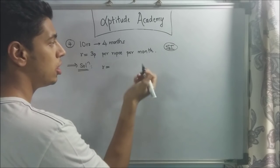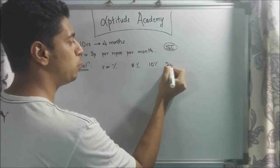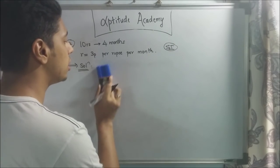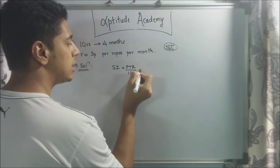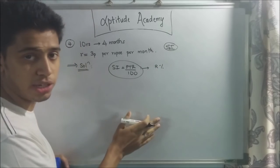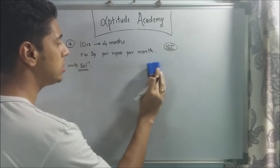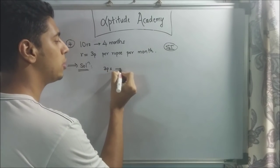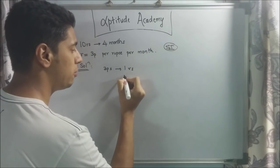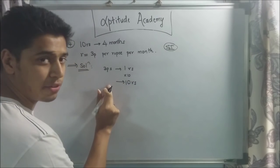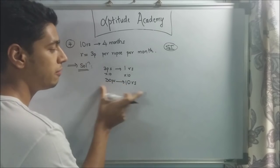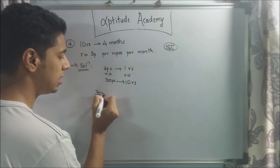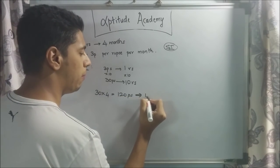Usually for simple interest problems, the rate is given as a percentage, but here it's given as 3 paise per rupee per month, so we don't use the formula SI equals PTR over 100, as that formula applies when R is a percentage. We'll calculate orally: 3 paise per rupee, and the investment is 10 rupees, so that's 30 paise per month. He's invested for 4 months, so 30 into 4 equals 120 paise, which equals 1.2 rupees.